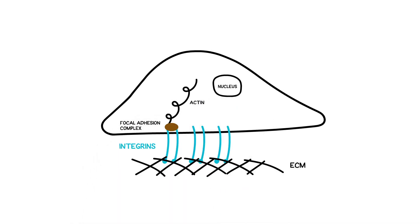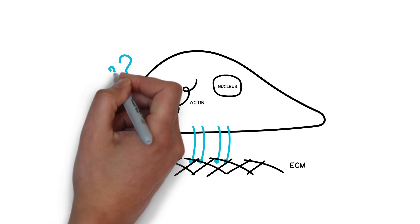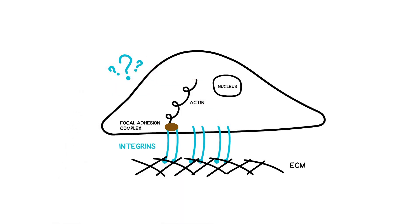This enables cells to sense and transduce mechanical forces into downstream signaling. However, researchers have previously overlooked the functionality of other transmembrane proteins involved in mechanotransduction.